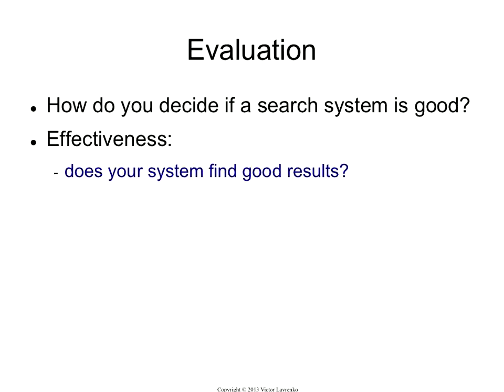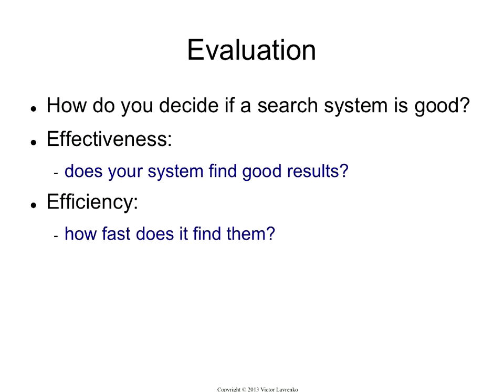There are basically two dimensions to this, and we talked about this in the first lecture. So your search engine has to be effective — this means it has to find good, relevant results. It's not enough to just match the words in the documents; you have to figure out which documents are going to go at the top of the ranking. And then the second component is it must be fast. That's the efficiency part — how long does the user have to wait for the results?